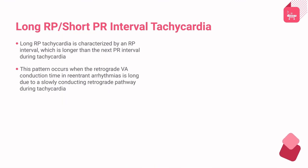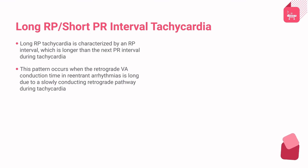Long RP tachycardia is characterized by an RP interval which is longer than the PR interval during tachycardia. This pattern occurs when the retrograde VA conduction time in reentrant arrhythmias is long due to a slowly conducting retrograde pathway. It consists of negative P waves in the inferior leads and includes the permanent form of junctional reciprocating tachycardia (PJRT). We will now discuss junctional tachycardia.